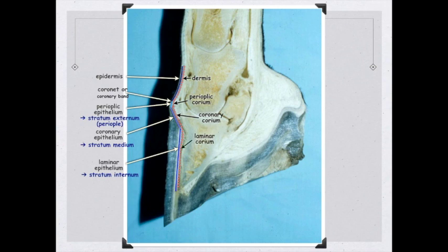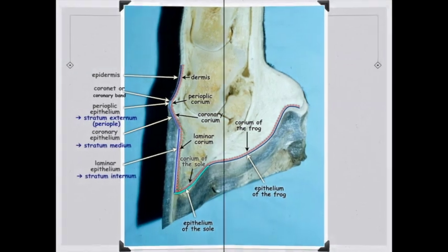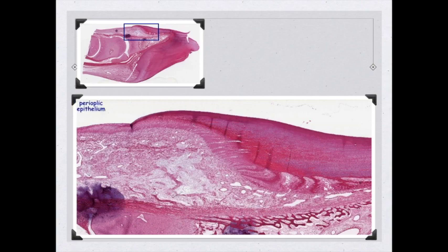We also have the epithelium of the sole with a corium of the sole, and an epithelium of the frog with a corium of the frog. Looking at this image, we can see the perioplic epithelium, the coronary epithelium, and some laminar epithelium.